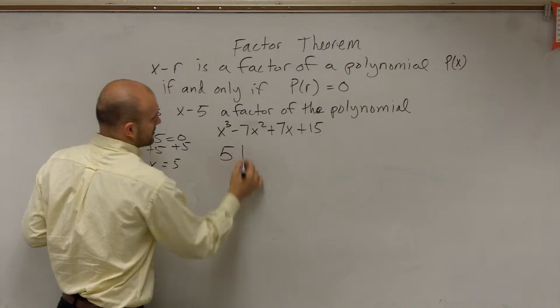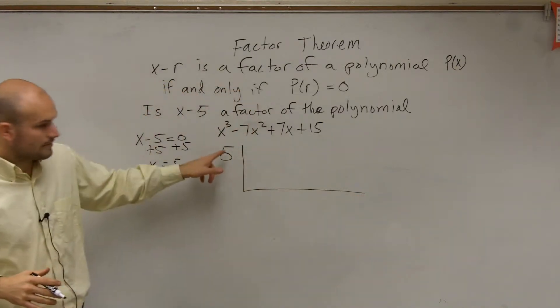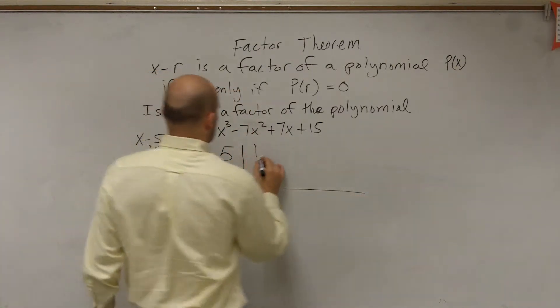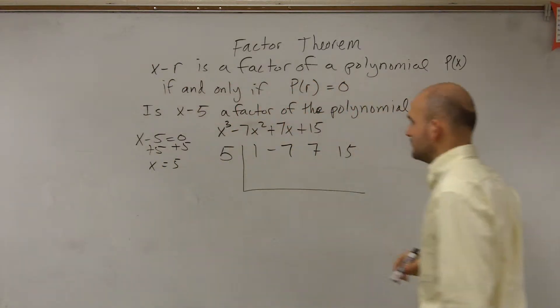So now let's apply synthetic division. So we have 1, negative 7, 7, 15.